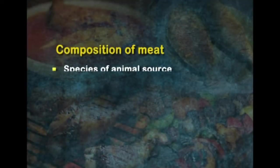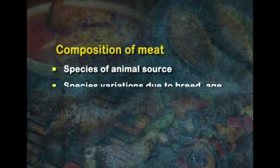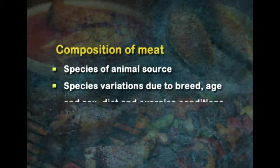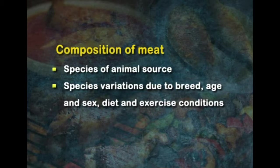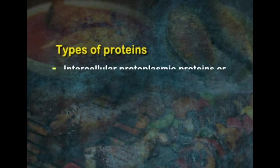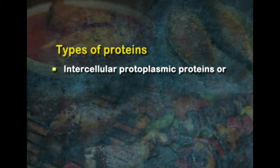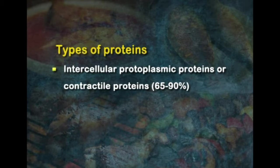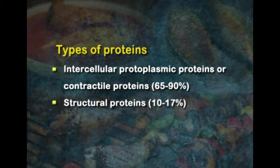The composition of meat varies with the species of the animal source, as well as due to breed, age, sex, diet and exercise conditions. Meat contains two types of proteins: intercellular protoplasmic proteins, also known as contractile proteins, which form the majority — 65 to 90 percent — and structural proteins, which form about 10 to 17 percent and are mostly made up of collagen and elastin.